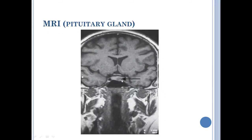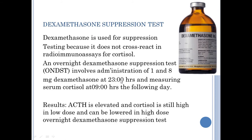This is the MRI showing the microadenoma found in his pituitary gland. The dexamethasone suppression test: we inject 1 mg overnight — this is the overnight dexamethasone suppression test. There is a low dose and a high dose version. With the low dose of 1 mg given overnight at 11 p.m., we then measure cortisol at 9 a.m. the next day. We found ACTH was elevated and cortisol was still high, indicating Cushing syndrome. However, with the high-dose overnight dexamethasone suppression test, the cortisol level is lowered — this indicates Cushing's disease due to a primary pituitary microadenoma.